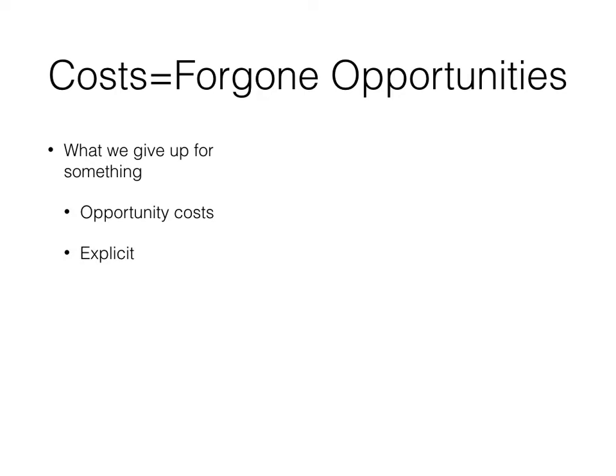Sometimes those costs are explicit — things that we see, they're obvious, they're monetized. Others are implicit — they are non-monetized opportunity costs. These would be things like the time of an owner of a restaurant or a business, the time they spend that they are not being paid. That would be the opportunity cost. It would be the foregone interest on capital that's being used, or the alternative uses of capital — whatever that return would be. That would be an implicit cost.